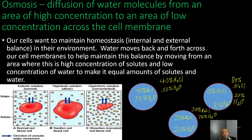Our third type of passive transport is osmosis — the diffusion of water molecules from an area of high concentration to an area of low concentration across the cell membrane. Like diffusion and facilitated diffusion, it moves from high to low concentration and does not require energy. This happens because our cells want to maintain homeostasis, which is the internal and external balance in our environments. Water moves back and forth across cell membranes to help maintain this balance.